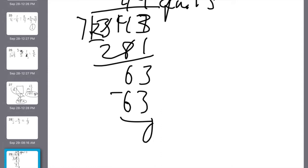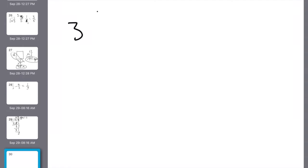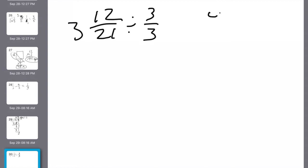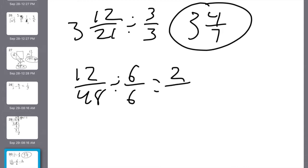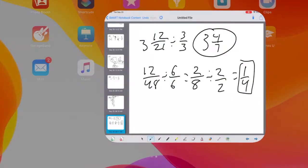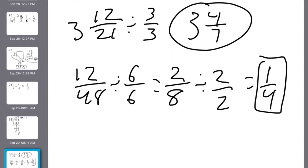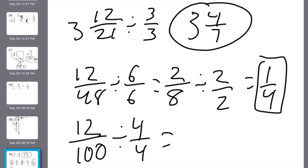Number 5: write each number as a reduced fraction. I start with 3 and 12 over 21 — divide both by 3: 12 divided by 3 is 4, 21 divided by 3 is 7. The whole number stays, giving 3 and 4 sevenths. Next is 12 over 48 — I saw it could go by 6, got 2 over 8, then realized it needed dividing by 2 again: 1 over 4. Next is 12 percent, meaning 12 over 100. Divide both by 4: 12 divided by 4 is 3, 100 divided by 4 is 25. Reduced to lowest terms: 3 over 25.